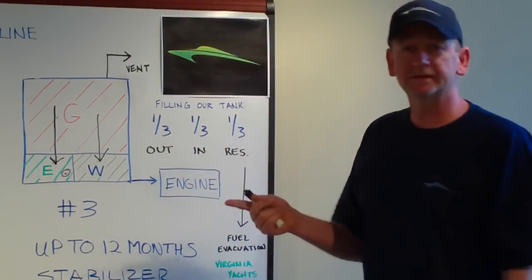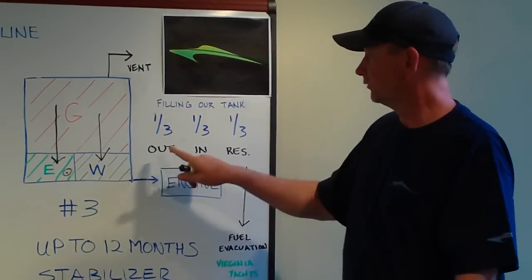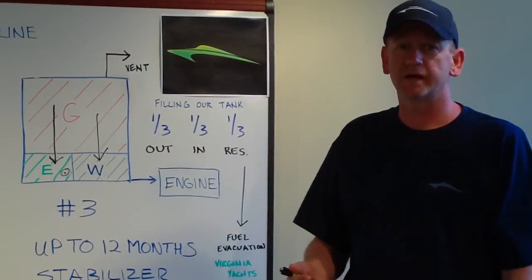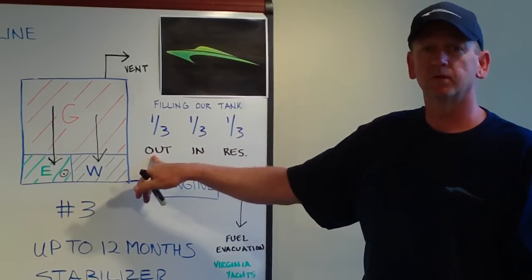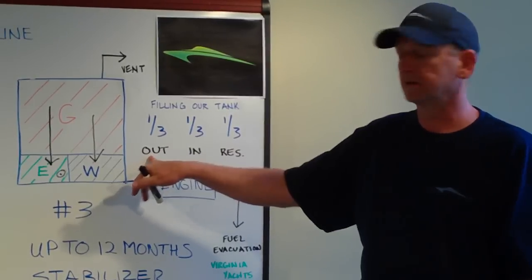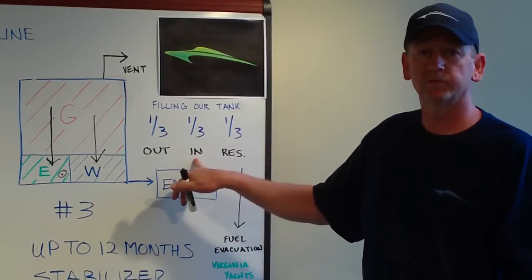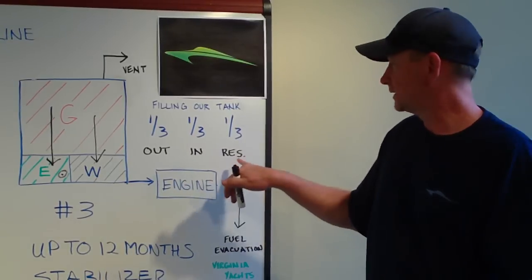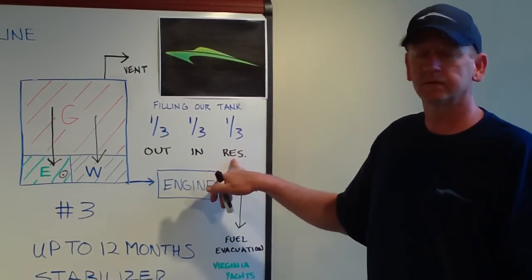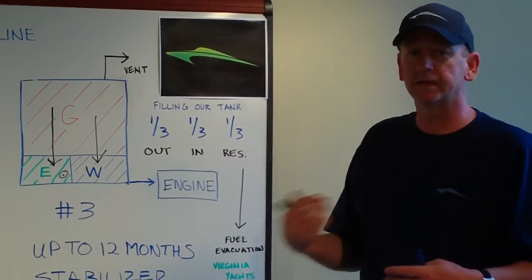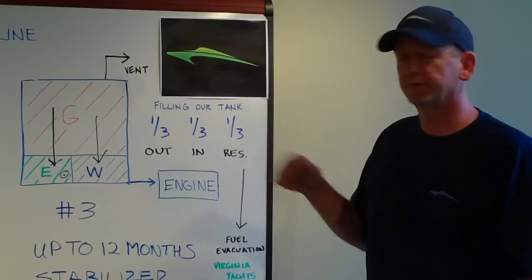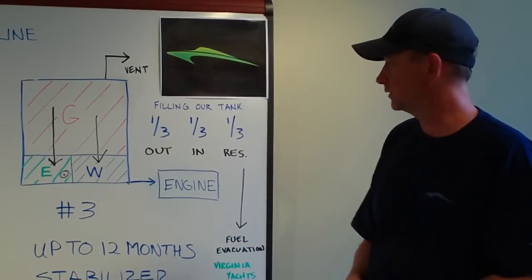So an example quickly would be, if we want to go 10 miles on our vessel, we want to put 10 miles worth of fuel to go out 10 miles, 10 miles worth of fuel to come back in, and 10 miles worth of fuel in reserve. That's different for every vessel, and you can contact us to try to figure out what your particular boat is doing.